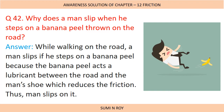Next question: Why does a man slip when he steps on a banana peel thrown on the road? While walking, a man slips on a banana peel because the banana peel acts as a lubricant between the road and the man's shoes, which reduces friction. Since it acts as a lubricant, the smooth surface has very little friction, making it very difficult for the man to walk.